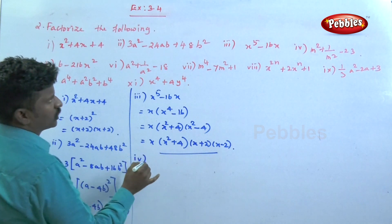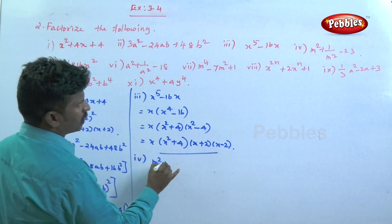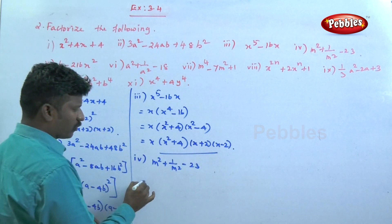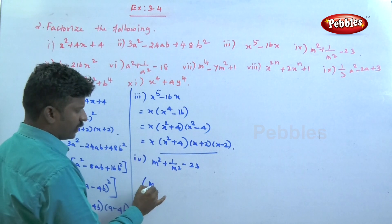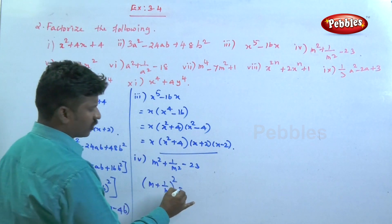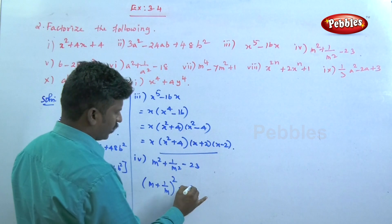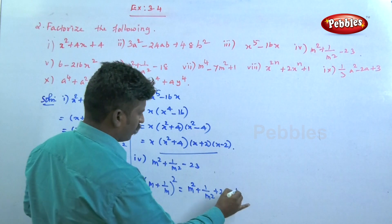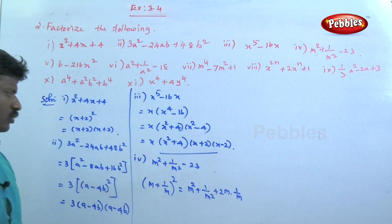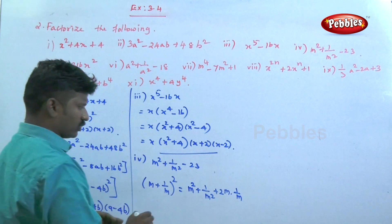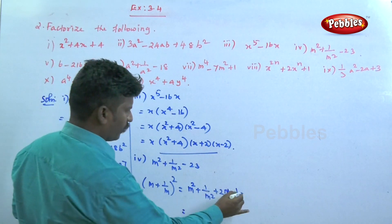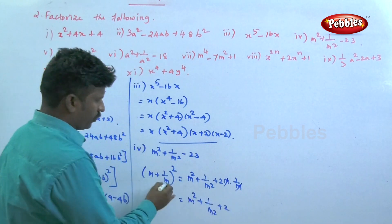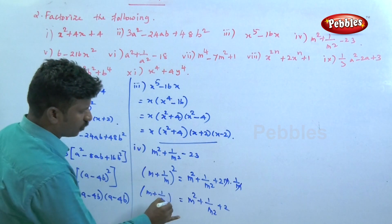The fourth question: m squared plus 1 by m squared minus 23. Using the a plus b whole square formula — m plus 1 by m whole square — expanded gives a squared plus b squared plus 2ab. So m squared plus 1 by m squared plus 2 equals m plus 1 by m whole square.